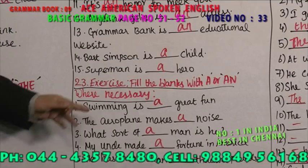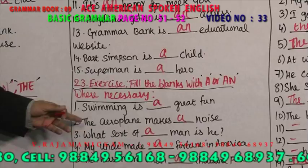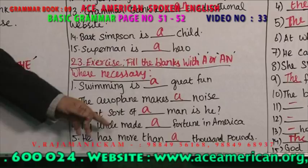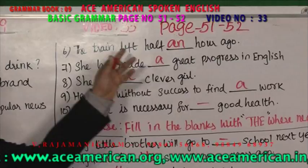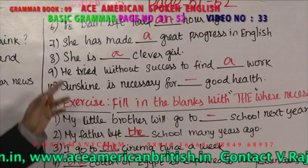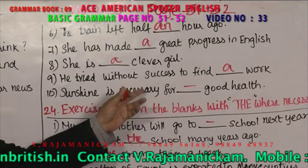Now fill in the blanks with 'a' or 'an' when necessary. Swimming is a great fun. The aeroplane makes a noise. What sort of a man is he? My uncle made a fortune in America — he has more than 8,000 pounds. The train left half an hour ago — after 'half' you have to use 'an.' She has made great progress in English. She is a clever girl. He tried without success to find work. Sunshine is necessary for good health — not 'a good health,' just 'good health.'